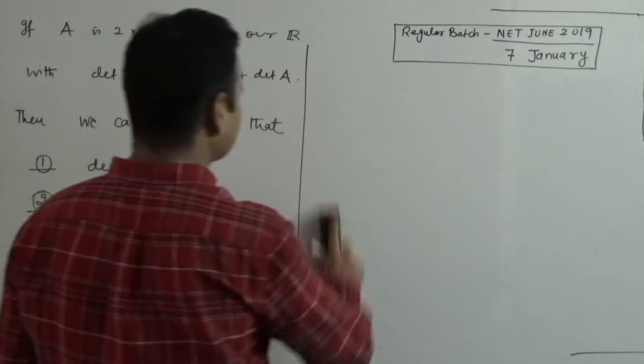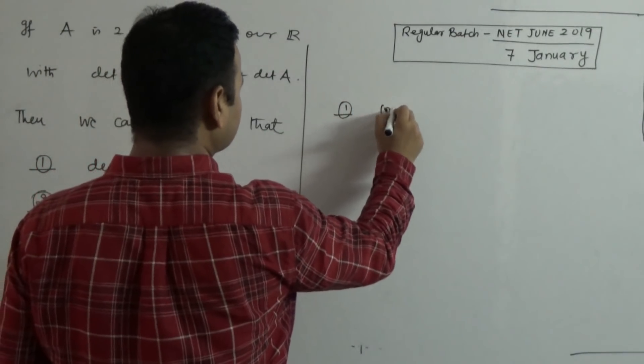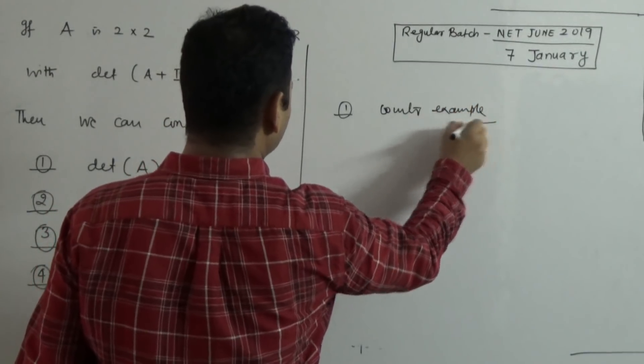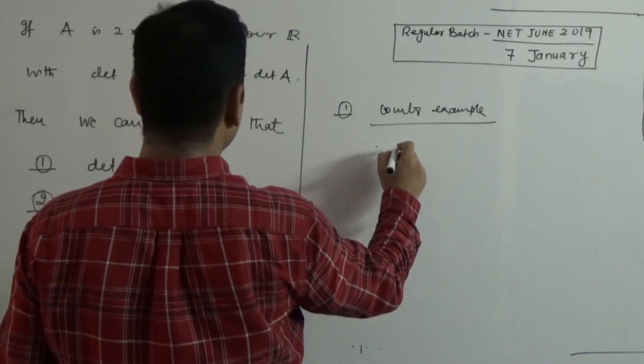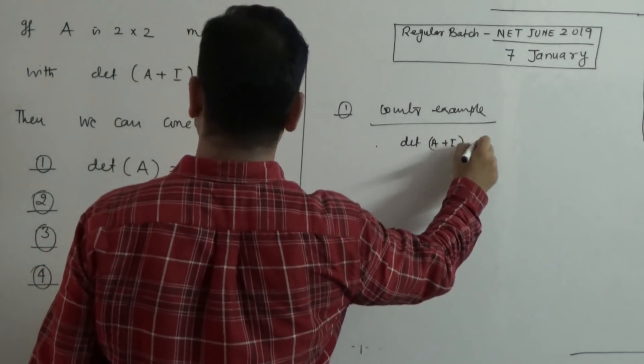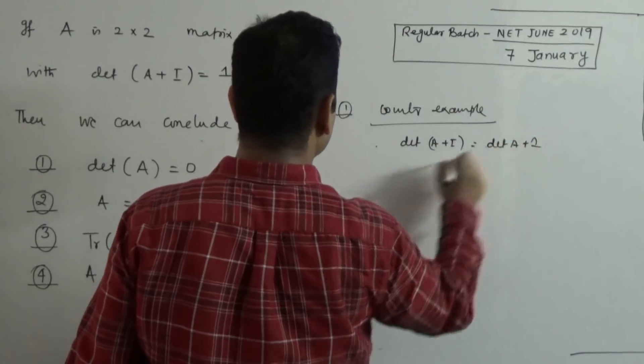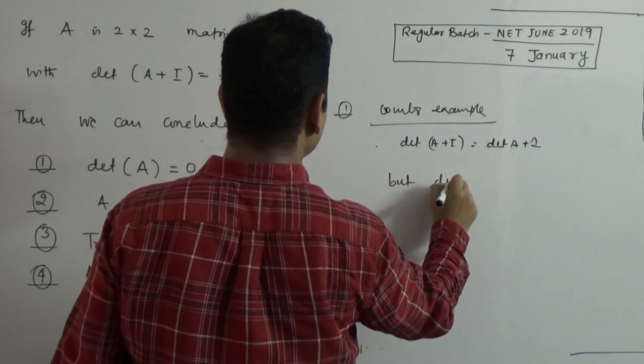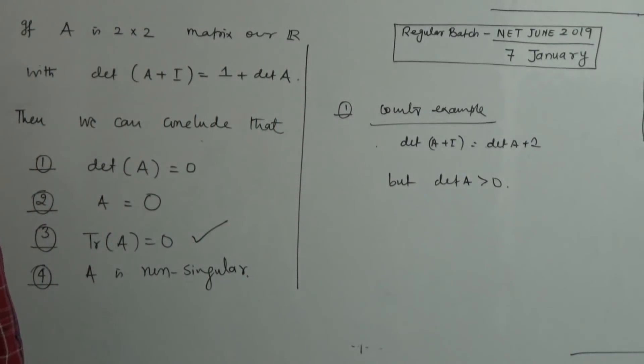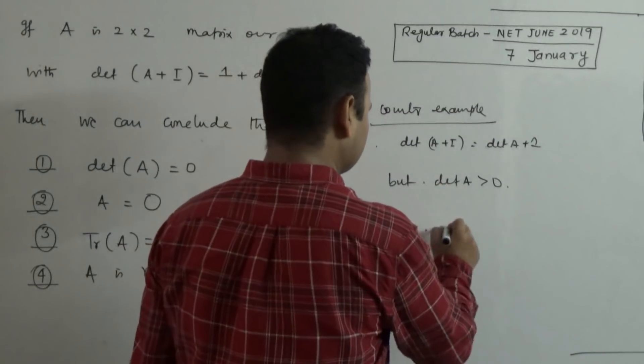Here is the main exercise. First find counter example such that determinant of A+I is equal to determinant of A plus 1, but determinant of A is positive. Find that. Is this possible or not? If not possible, then find this.